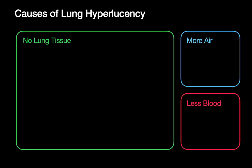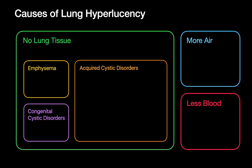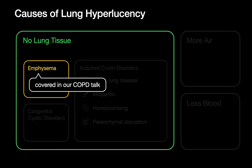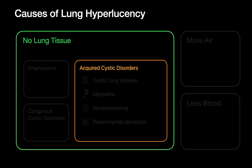There are three reasons why you'd encounter a situation where there's no lung parenchyma in an area. The most common situation is emphysema, but the two other situations are cystic disorders within the lung — some congenital, some acquired. For acquired cystic disorders, we'll focus on four situations: cystic lung disease, idiopathic disorders, honeycombing, and lung parenchymal disruption. Emphysema is a large topic covered separately in our COPD talk.